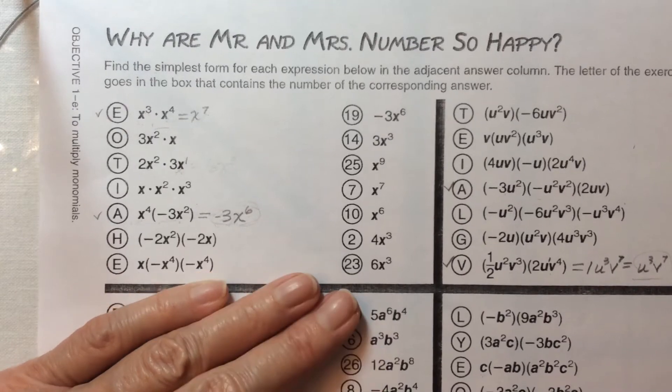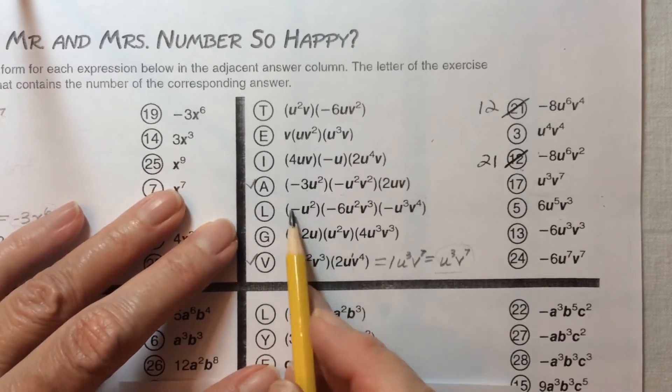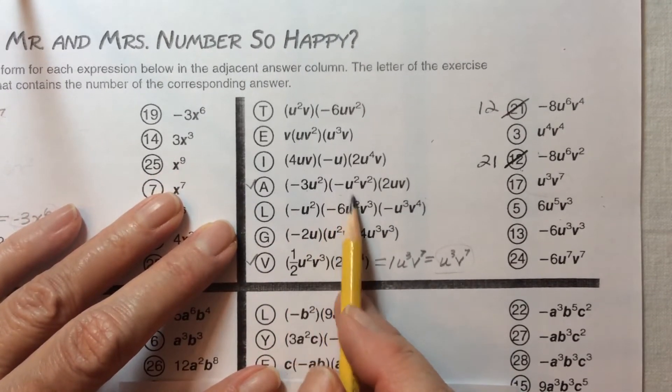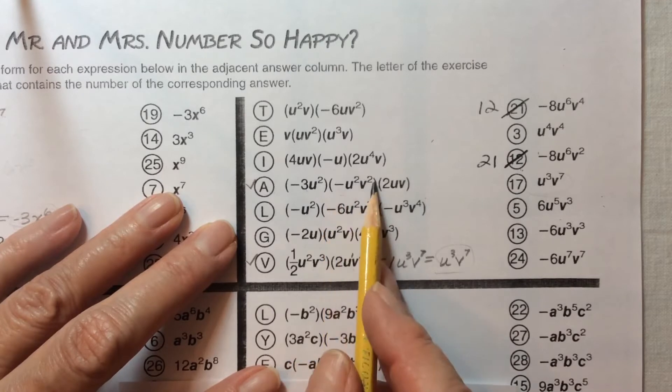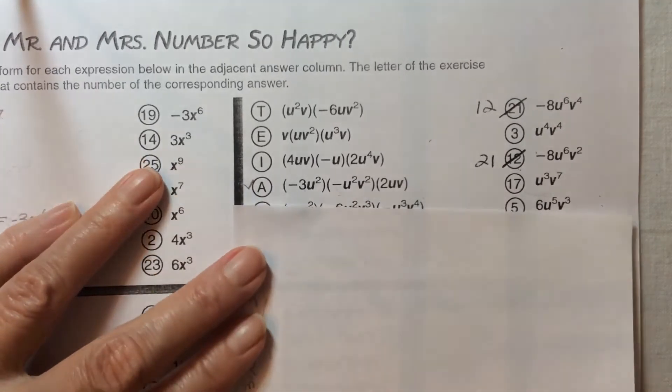The third problem on this sheet has a negative sign in front of one of the variables. So what do we do with that?